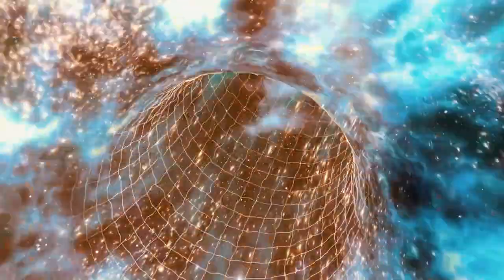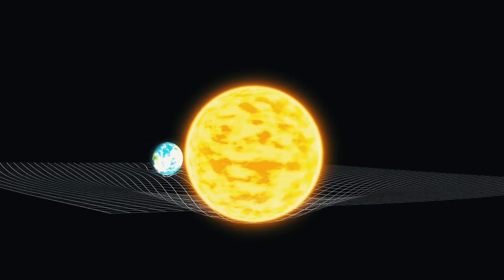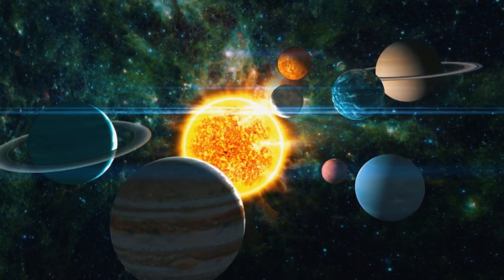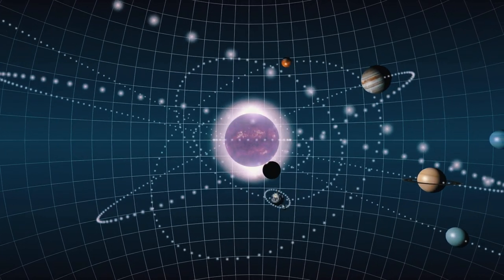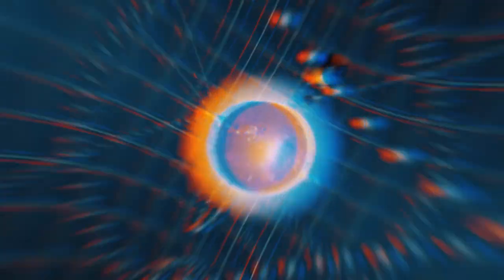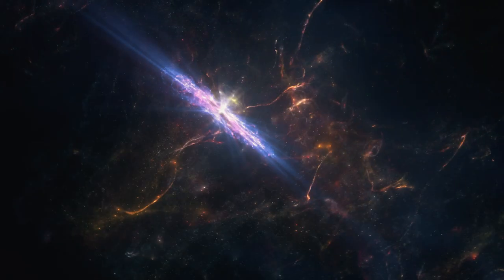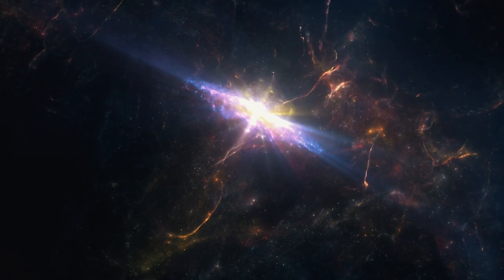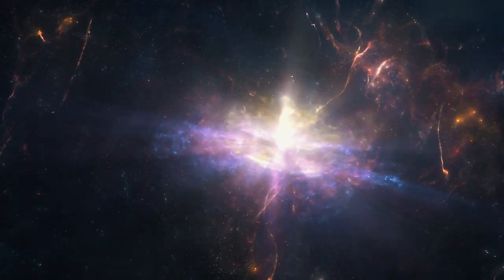To understand the big crunch, we need to look at the concept of gravity. Gravity is the force that governs the motion of celestial objects in space and it is what holds galaxies, stars, and planets together. In a universe where gravity is the dominant force, everything attracts everything else, causing matter to clump together and form larger structures.